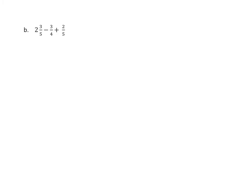So let's do that. So I have two and three-fifths plus two-fifths minus three-fourths. I know that two and three-fifths plus two-fifths equals two and five-fifths, which is the same as three. Three minus three-fourths is two and one-fourth.